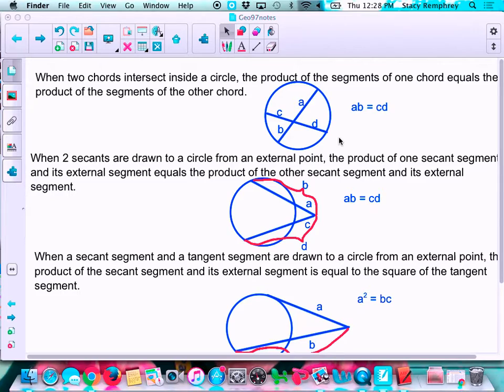So these are our theorems. When two chords intersect inside a circle, the product of the segments of one chord equals the product of the segments of the other chord. So you'll see here, A would be from the intersection point to the edge of the circle, B would be this segment, C is this part of the chord, and D is this part. If you're trying to find a segment or even the whole chord, it would be A times B equals C times D. It came from similar triangles, and we worked through the proof in class.